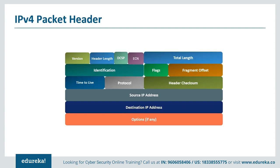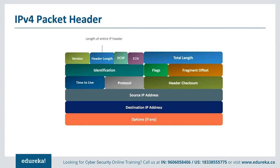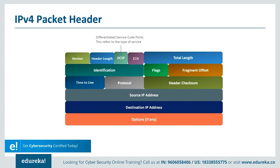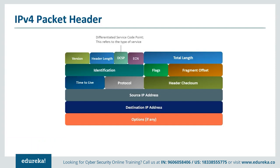Let's briefly discuss all the header fields. The version part is always set to four and shows the version of the protocol. Next is the header length — the number of 32-bit words forming the header, usually five. Next is the DSCP field — Differentiated Service Code Point — a six-bit field that can indicate quality of service needs and informs a router how to queue packets. The ECN field — Explicit Congestion Notification — tells us about congestion in the network route.